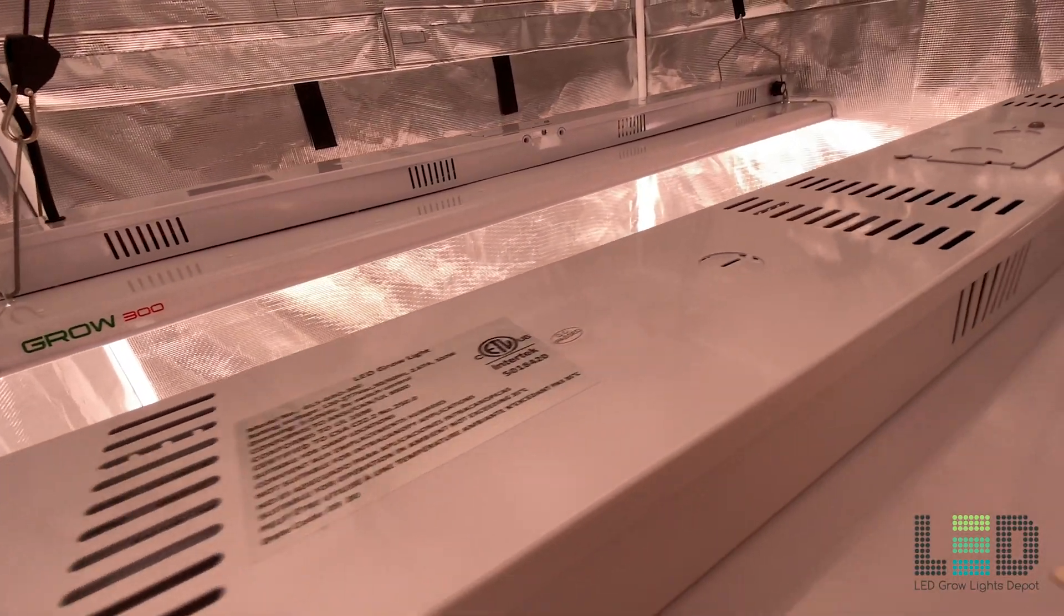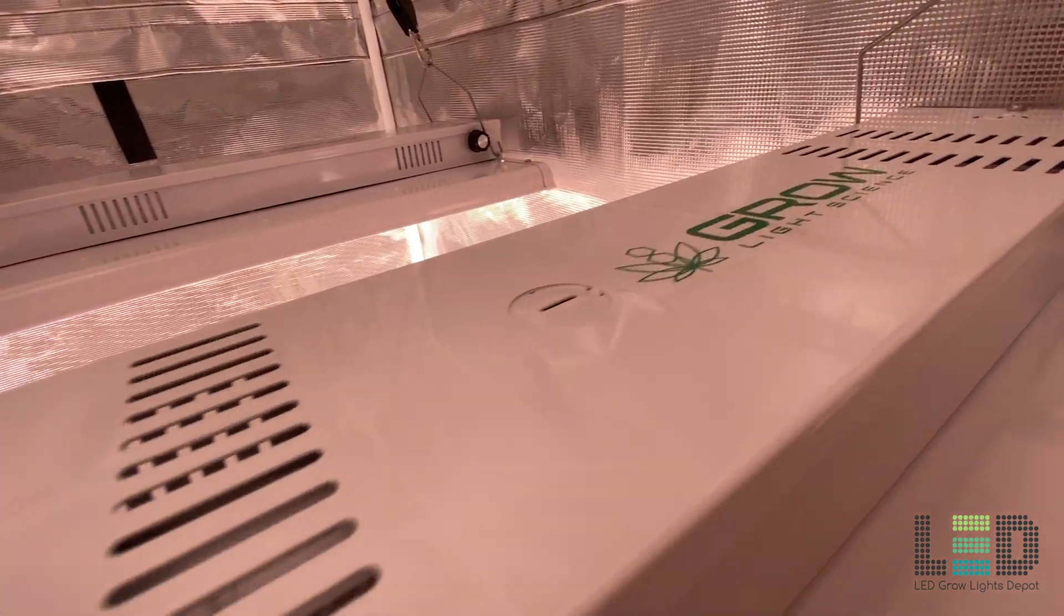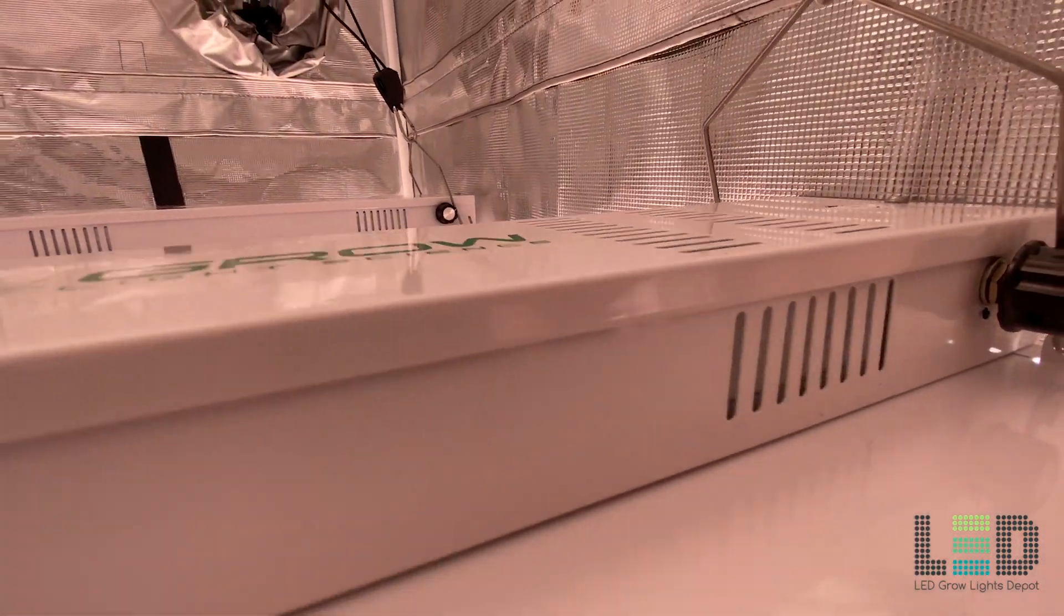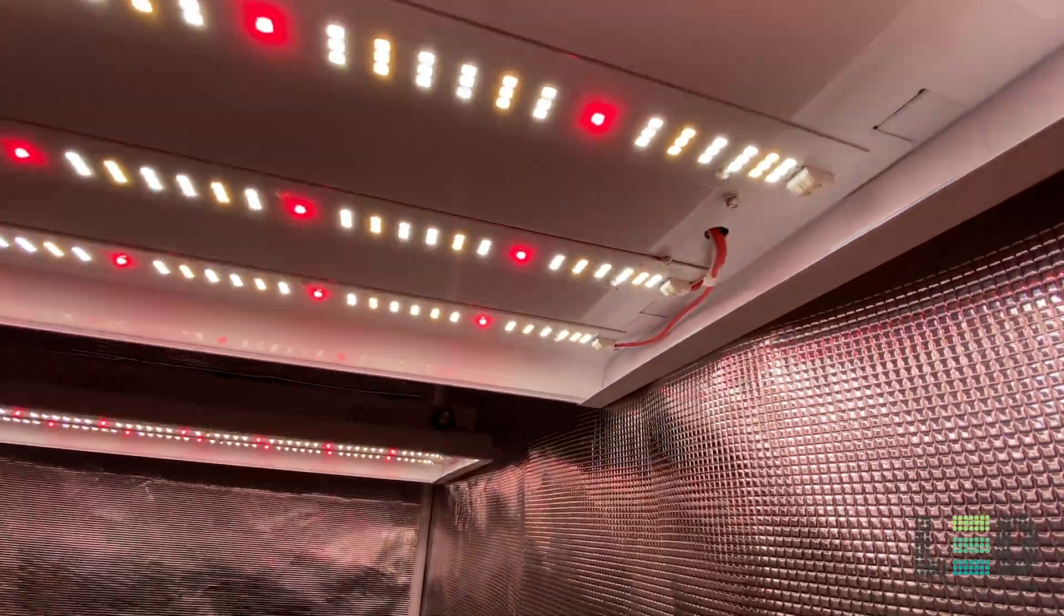All Grow Light Science fixtures come standard with a built in dimming knob, dimmable to 10%, which gives you complete control of the light output at different stages of growth. All of these components are held together on a sturdy metal casing.